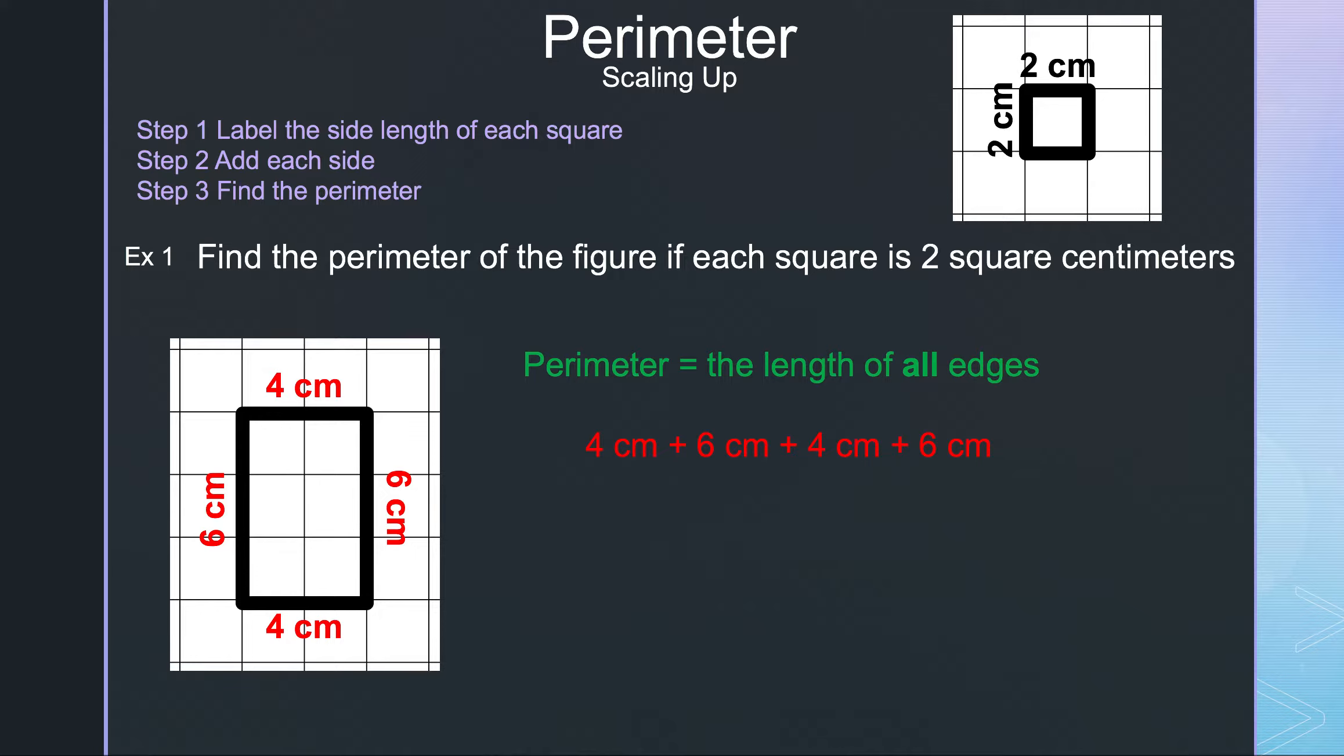Now we can add them together. I usually pick the top and work my way clockwise so I don't forget any side lengths. Adding 4 plus 6 plus 4 gives 14, and 14 plus 6 gives me 20. So the perimeter of this figure is 20 centimeters.